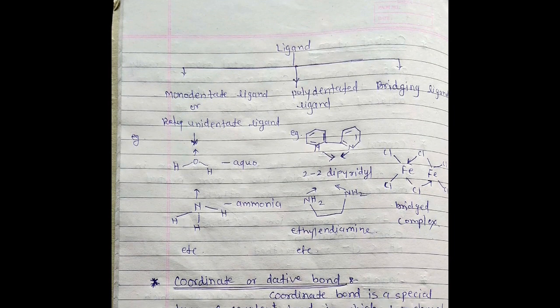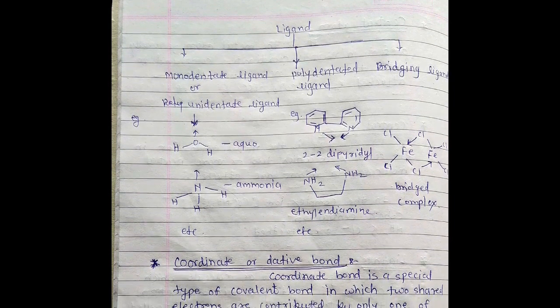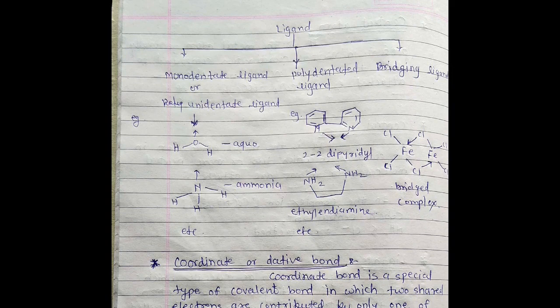Examples of monodentate ligands: aqua (H2O), ammonia (NH3). Polydentate ligand: 2,2-dipyridyl. Then ethylenediamine is example of the polydentate ligands.